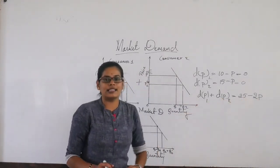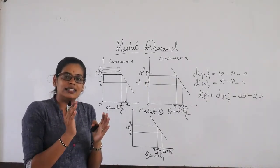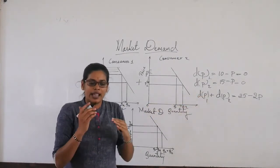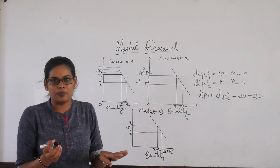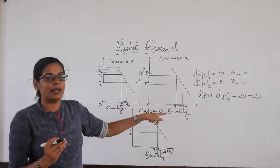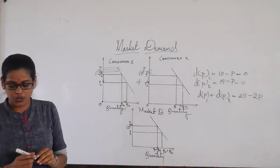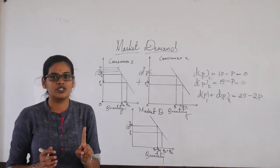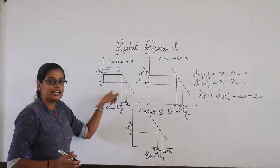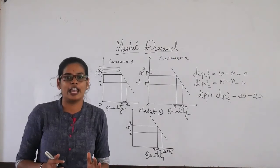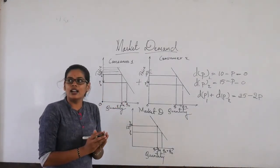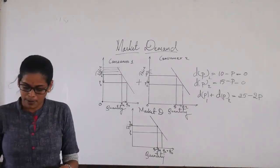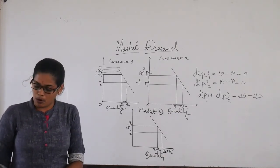So 25 minus 2P is the market demand equation for consumers A and B combined. This shows that anything more than 10 rupees cannot be bought by consumer 1, and goods less than 15 rupees can be bought by consumer 2. That is all about market demand — it considers every consumer's buying behavior and adds their quantities with changes in price. In the next class, we will be seeing more on elasticity of demand. See you all in the next video.